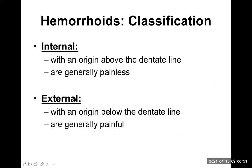Hemorrhoids are classified as internal and external. Internal hemorrhoids originate above the dentate line and are generally painless. External hemorrhoids originate below the dentate line and are generally painful. The dentate or pectinate line is the watershed line — arterial supply and venous drainage are different above and below it. Internal hemorrhoids are likely caused by dilation of superior rectal vein tributaries, while external hemorrhoids result from inferior rectal vein tributaries. Sometimes internal hemorrhoids prolapse downward and present as external ones.